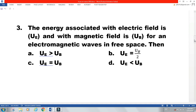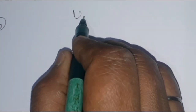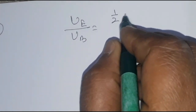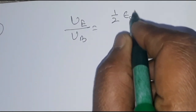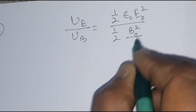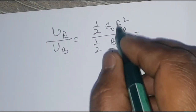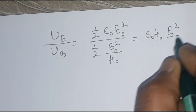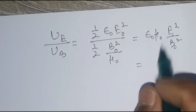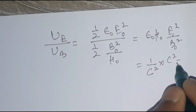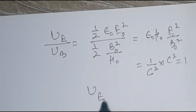Question three: the energy associated with the electric field and magnetic field is given, and you have to find the relation between them. We take the ratio U_E / U_B. U_E = ½ε₀E₀² and U_B = B₀²/(2μ₀). Dividing: U_E/U_B = ε₀μ₀ × E₀²/B₀². Since ε₀μ₀ = 1/c² and E₀/B₀ = c, the ratio equals 1. Therefore U_E equals U_B.